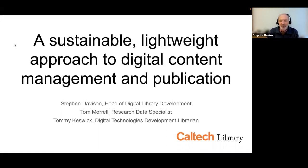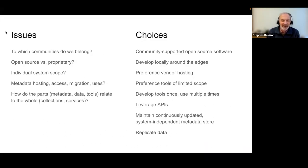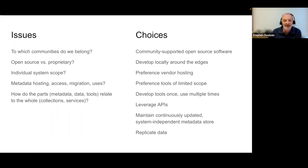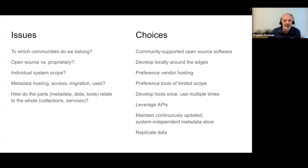There have been major changes in the way software is designed over the past decade or two. Significant characteristics of contemporary approaches include the embrace of open source software, leveraging hosted and cloud-based services, and modular software design and microservices relying on application programming interfaces, or APIs. The Folio Library Service Platform, the Invenio Digital Repository Framework, and ArchivesSpace are all good examples of software projects with strong support communities that leverage contemporary approaches to building flexible and sustainable software.